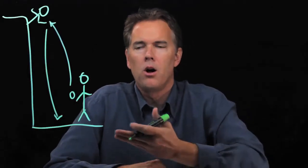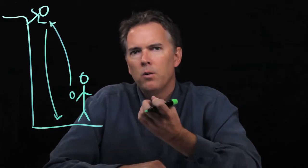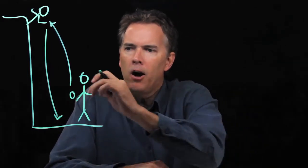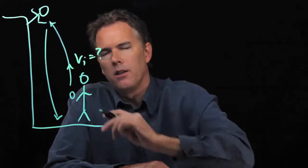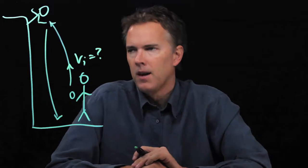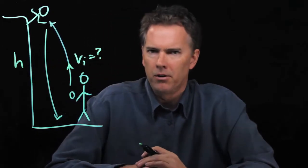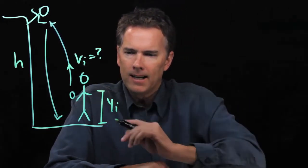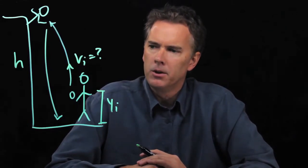Let's say you're going to toss a ball in the air to a friend hanging out the window of a dorm, and you want the ball to just barely reach them with no residual speed when it gets there. How fast do you need to toss it? What is the initial velocity VI that you need? We'll need to know the height the person is at and the initial height you launch it from.